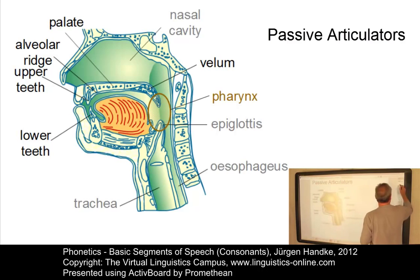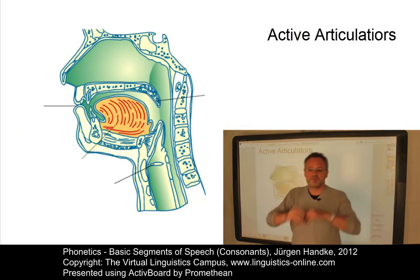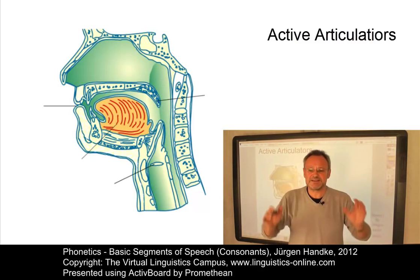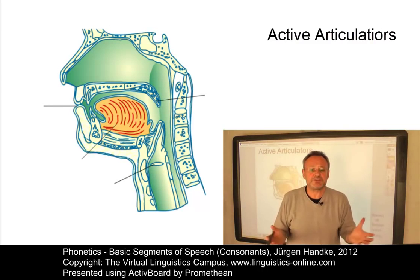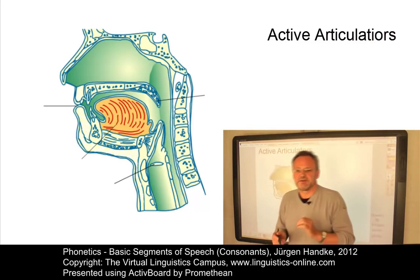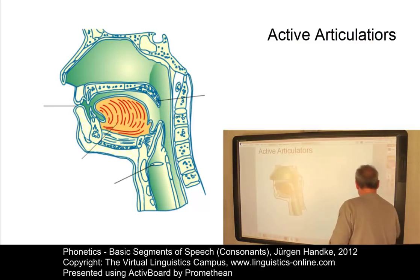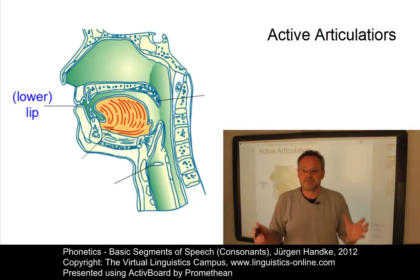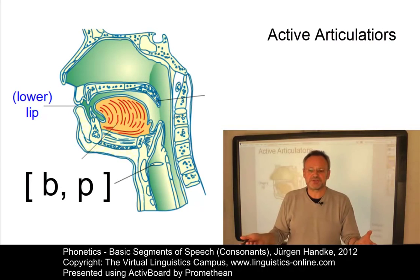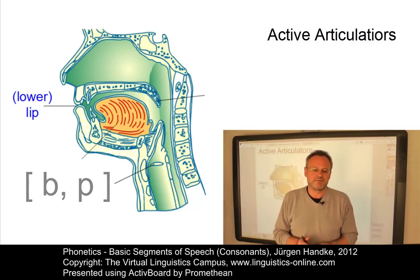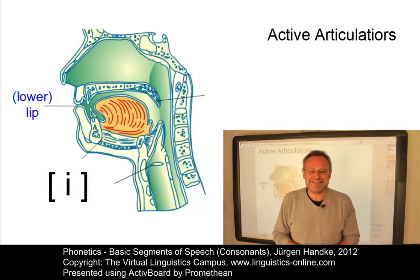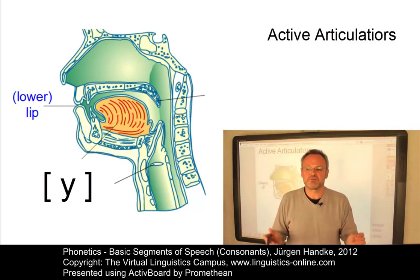Let us now look at the active articulators. The organ which is moved towards a passive articulator in producing speech sounds is called the active articulator. Starting at the front of the vocal tract, the first active articulator is the lower lip or the lips. The lips are actively involved in the production of labial consonants such as [b] or [p], and in the application of lip rounding to vowels such as [e], which involves spread lips, and [u], which involves rounded lips.